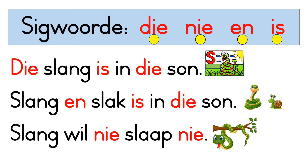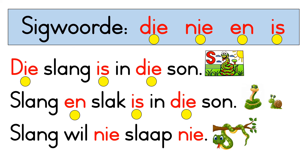And now we're going to use the sight words in a sentence. Ons gaan die sigwoordkies in 'n sin gebruik. Die slang is in die so'n. Slang en slak is in die so'n. Slang en slak is in die so'n. Snake and snail are in the sun. Slang wil nie slaap nie. Snake does not want to sleep.